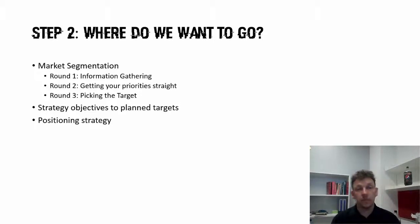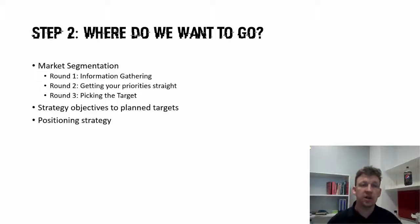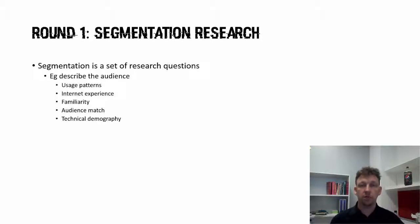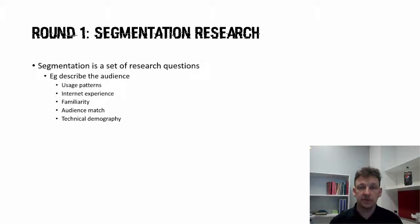So kicking it off: market segmentation — information gathering, prioritization, pick a target, and then act on it. Round one, you need to be able to describe your audience to me. You also need to be able to describe it to yourself and anyone else who might be interested in you.